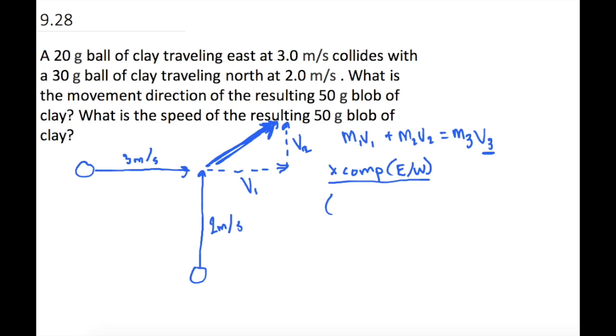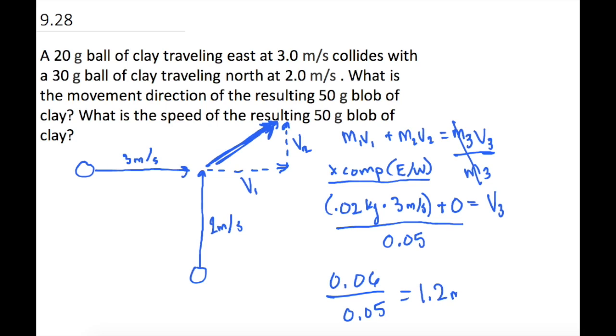So the first one we have in kilograms, we have 0.02 times its speed, which was 3 meters per second. And if you notice, the second ball of clay doesn't have any east, west, or x components. It's only north, south. So we could go ahead and add this in, but we know right away it's going to be 0. And then that's going to equal m3v3. But we want v3 so we're going to divide over m3. The total mass of the resulting m3 is going to be 50 grams or 0.05 kilograms. So if we do that math, the top part gives us 0.06 divided by 0.05, and we are left with 1.2 meters per second.